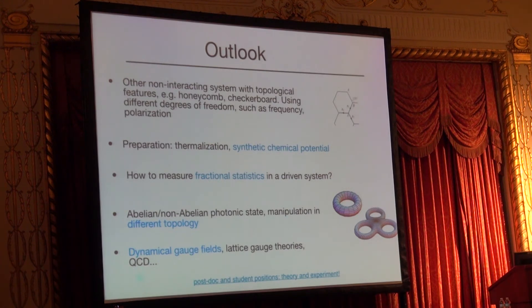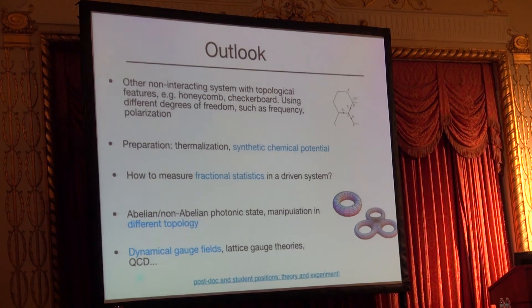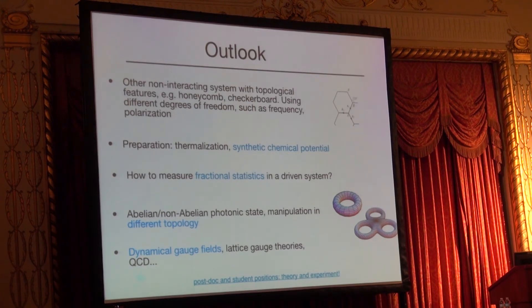Photons do not really thermalize — the inelastic scattering between photons is very weak. So we have to somehow tell them to thermalize. There is some nice work that managed to make a BEC of photons. One of the interesting questions is fractional statistics — all the story I told was about a driven system. How can we find fractional statistics when the system is driven? Usually people say: start from a ground state, excite two anyons and braid them around each other. We cannot do that in a driven system. The last outlook point is dynamic gauge fields — Peter Zoller will talk about that.